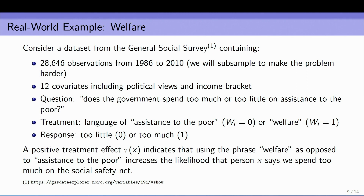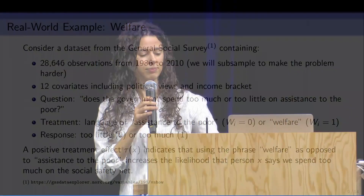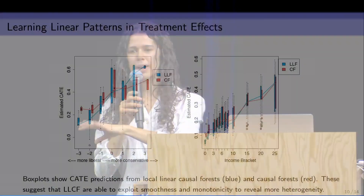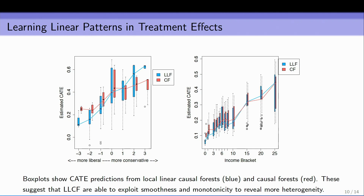The treatment here is the language used: either 'assistance to the poor' or 'welfare.' A positive predicted treatment effect means using the phrase 'welfare' makes respondents more likely to say we spend too much. Here are results stratified by political views on the left and income on the right. We ran causal forests shown in red and local linear causal forests shown in blue, then made box plots of predictions within each category, with lines connecting the medians.